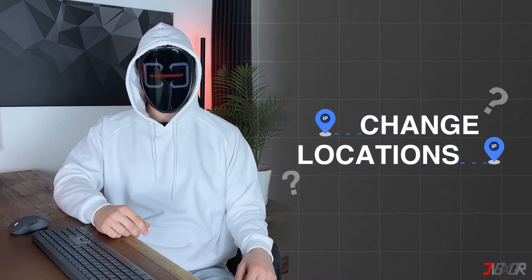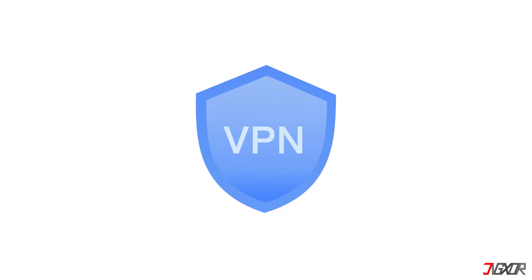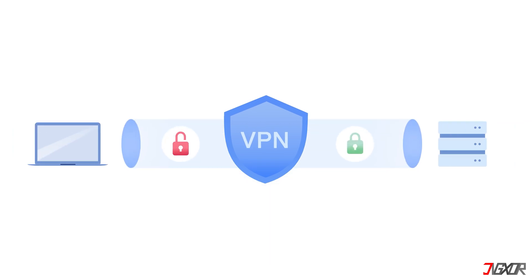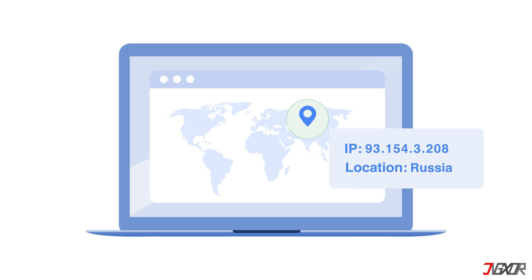How do you change these locations? Changing your GPS location usually involves adjusting the settings on your device. However, this doesn't change your IP address. To change your IP address, you need to use a virtual private network, or VPN. A VPN creates a secure tunnel between your device and a server in a different location. When you use a VPN, your internet traffic is routed through that server, making it appear as if you're browsing from the server's location.